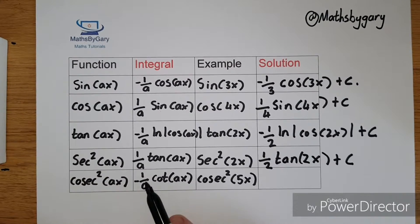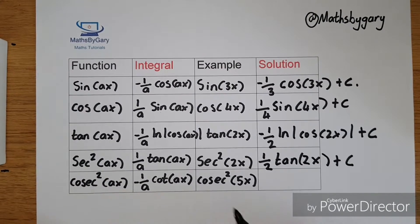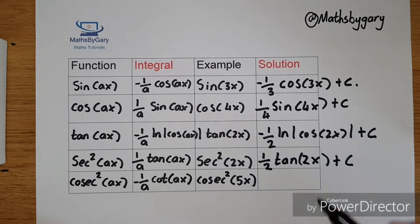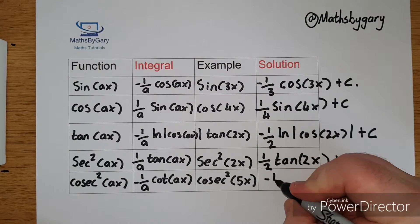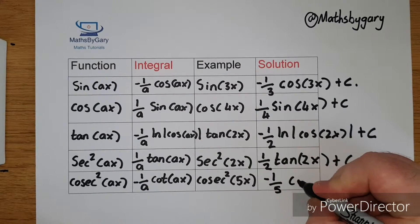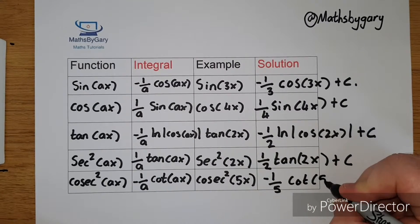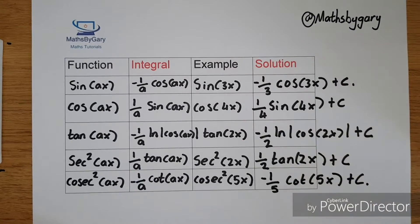The integral of cosec squared(ax) becomes minus 1 over a times cot(ax). So cosec squared(5x) will become minus 1 over 5 times cot(5x) plus c.